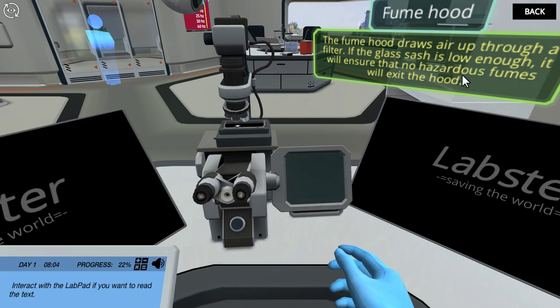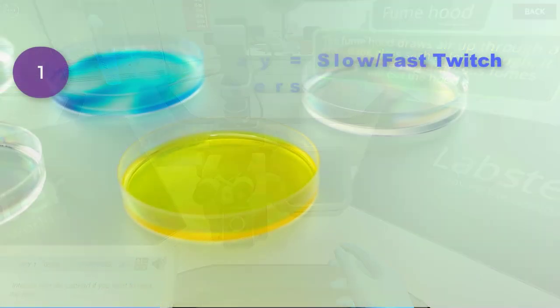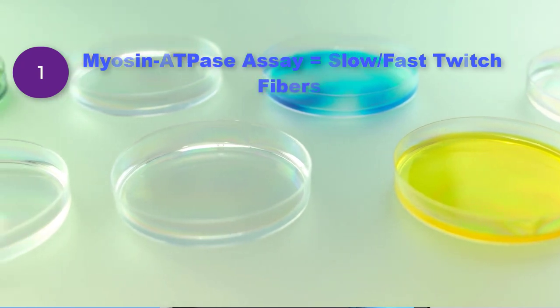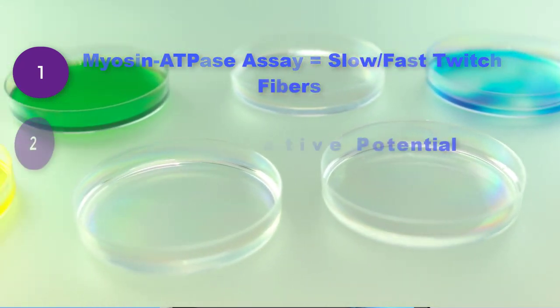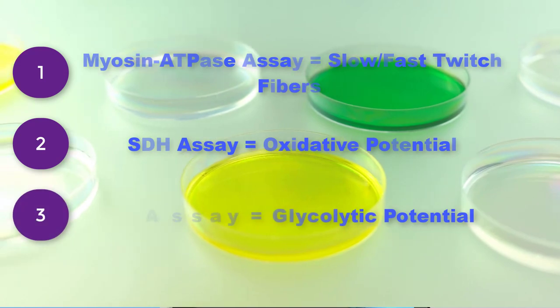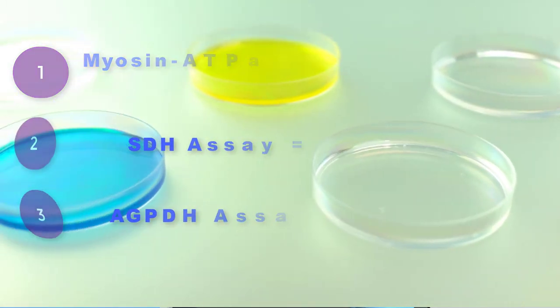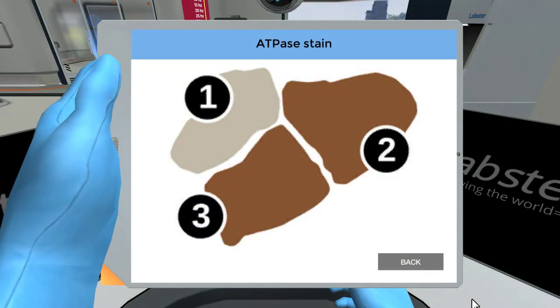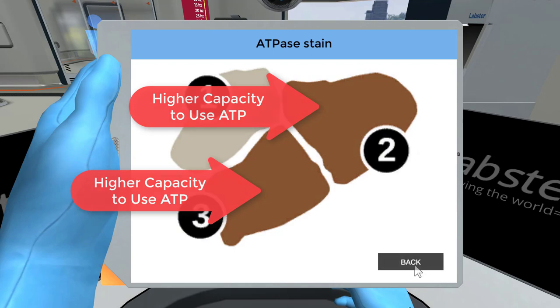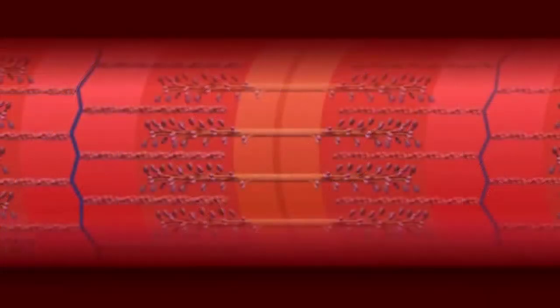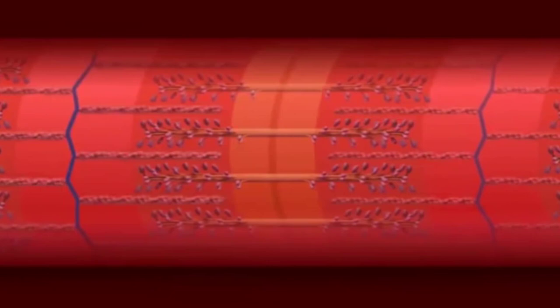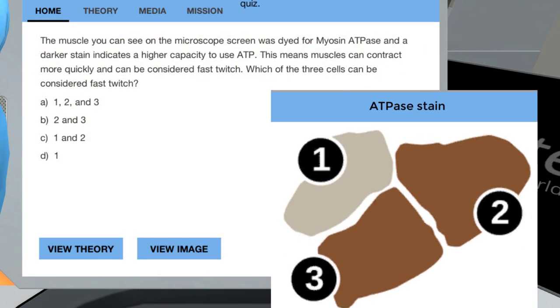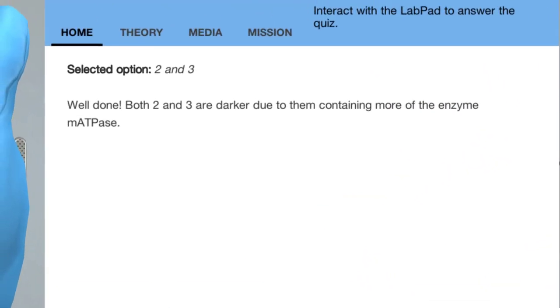Today we will focus on three histochemistry assays: 1. The myosin ATPase assay for slow or fast twitch fibers. 2. The SDH assay for oxidative potential. 3. The AGPDH assay for glycolytic potential. The muscle you can see on the microscope screen was dyed for myosin ATPase and a darker stain indicates a higher capacity to use ATP. This means muscles can contract more quickly and can be considered fast twitch. Which of the three cells can be considered fast twitch? Well done! Both 2 and 3 are darker due to them containing more of the enzyme myosin ATPase.